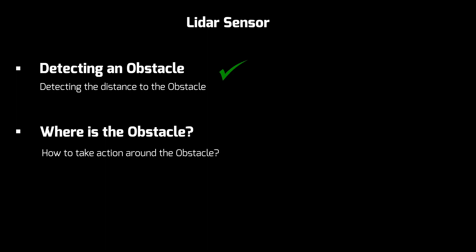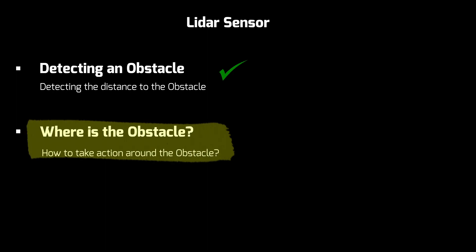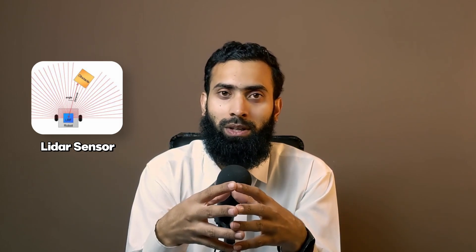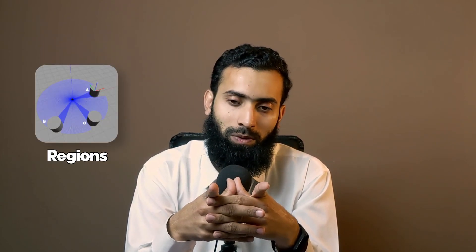We are unable to utilize the data effectively because wherever we put an obstacle, we only get a minimum value. We have completed part one — detecting an obstacle and its distance. The second and important part is: where is the obstacle, and how do we take action? This is what we have to decide. We will create regions to detect the object's position.